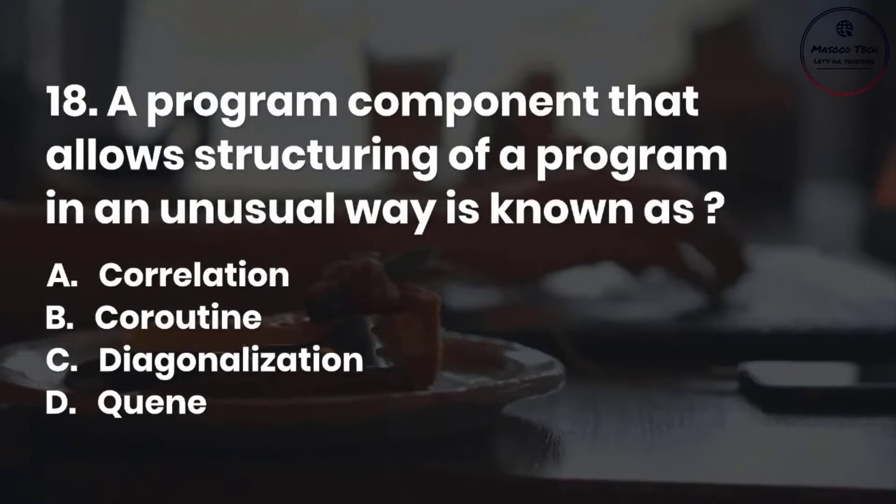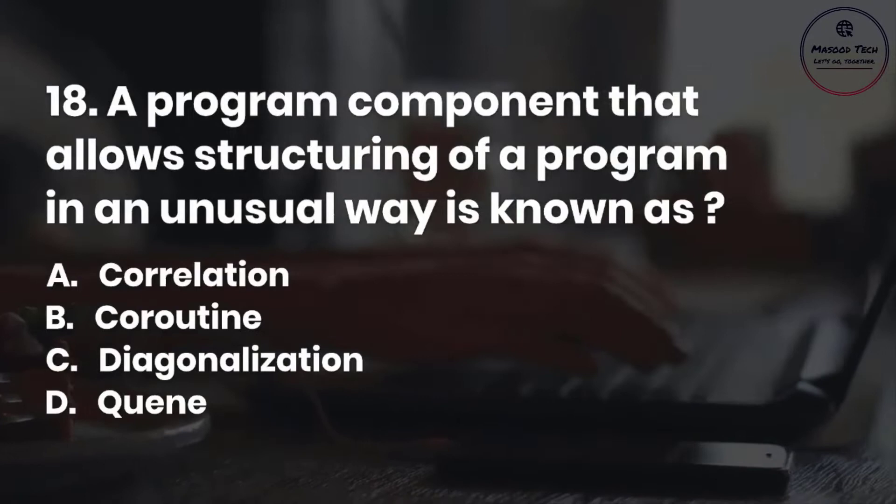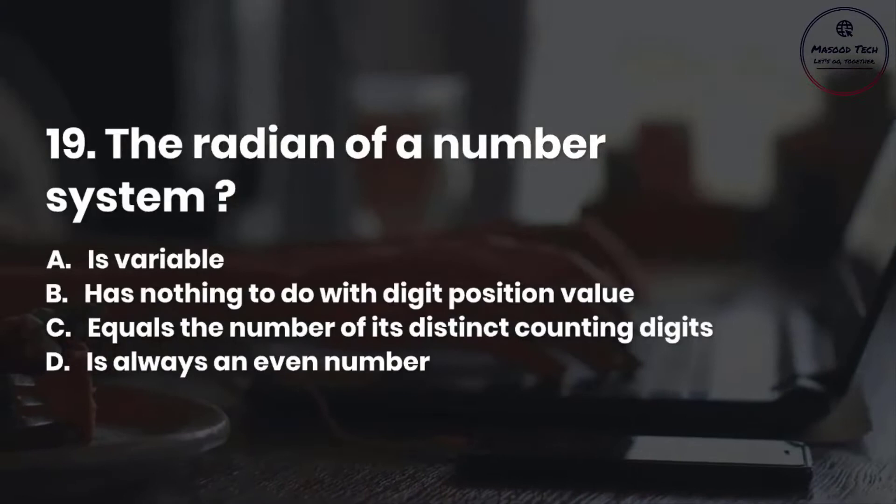Number 19. The radix of a number system: A. Is variable. B. Has nothing to do with digit position value. C. Equals the number of its distinct counting digits. D. Is always an even number. Correct answer is C.